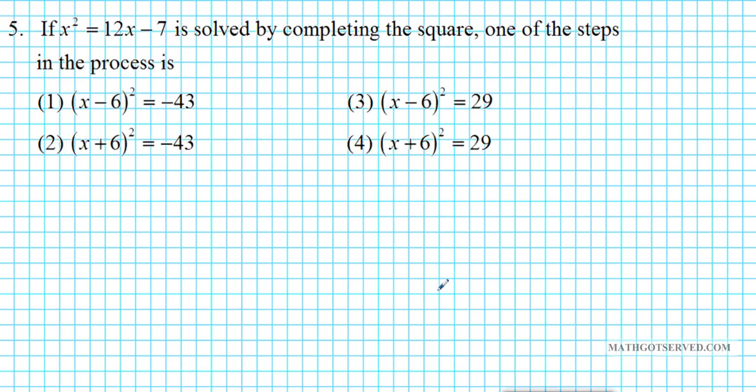Let's take a look at problem 5. It says, if x squared equals 12x minus 7, solved by completing the square. One of the steps in the process is, so we have x squared equals 12x minus 7. If you want to complete the square, we want to create an incomplete square on the left side. An incomplete square is of the form ax squared plus or minus bx. So we're going to subtract 12x from both sides. So we have x squared minus 12x equals negative 7.